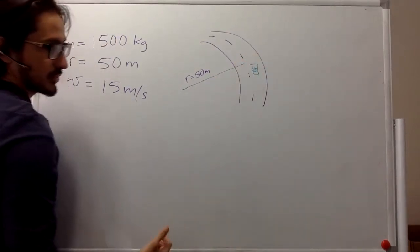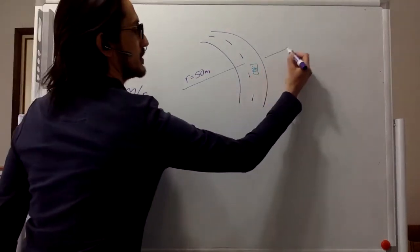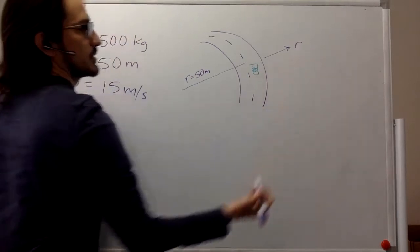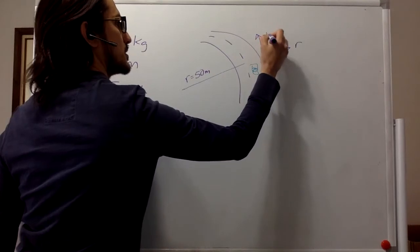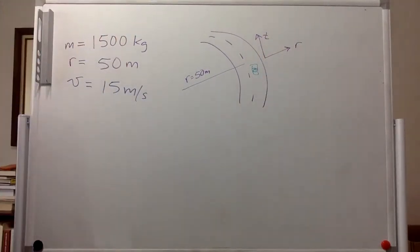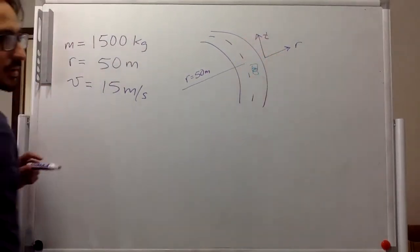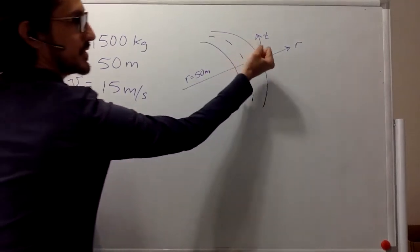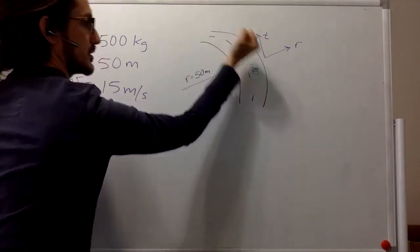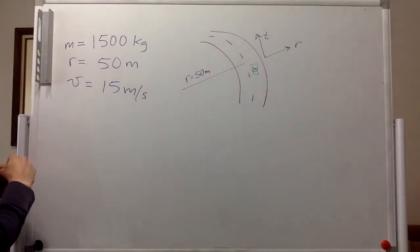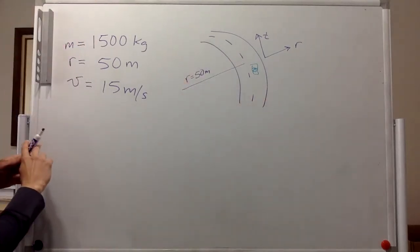So we use cylindrical coordinates, so we're going to have the radial coordinate over here, the tangential coordinate over here, and then the z-axis is coming out of the plane.